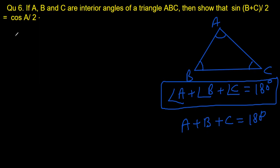Alright, so here we will write, angle A plus angle B plus angle C is equal to 180 means we are saying A plus B plus C is equal to 180 degrees.